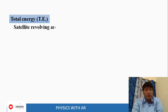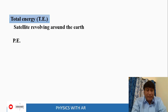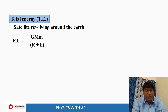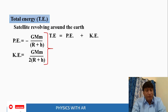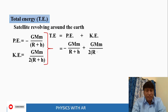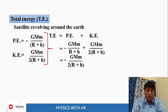For a satellite revolving around the earth, the potential energy equals minus G·M·m divided by (r + h). The kinetic energy equals G·M divided by 2(r + h). So the total energy, which is the sum of potential energy plus kinetic energy, gives us minus G·M·m divided by 2(r + h).